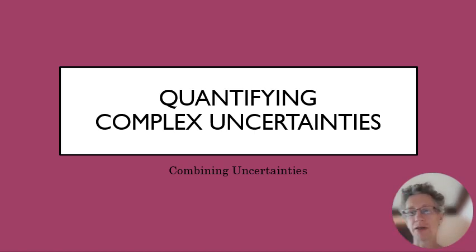All right, up to this point we've talked about different kinds of uncertainty: random uncertainty, calibration uncertainty, systematic, and so forth. But now we have to figure out how to combine those different things into one total uncertainty for our final value.